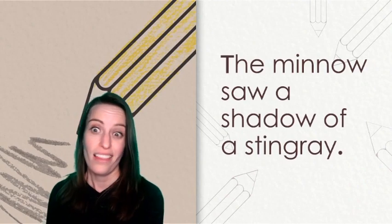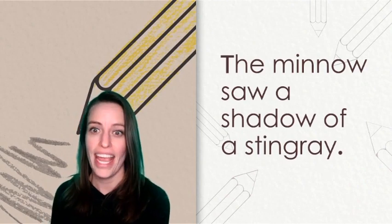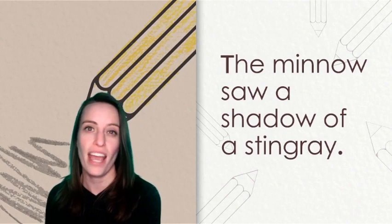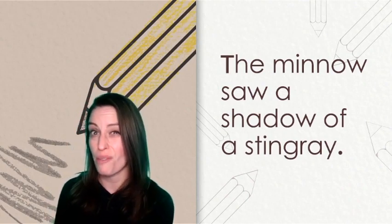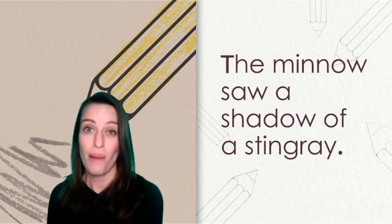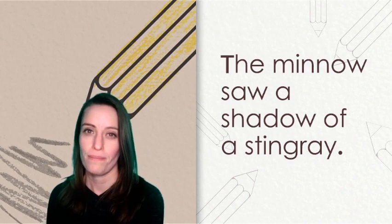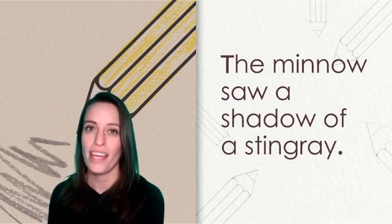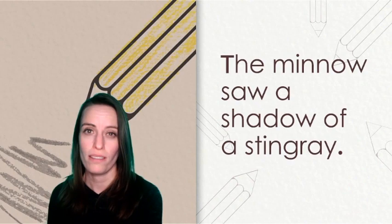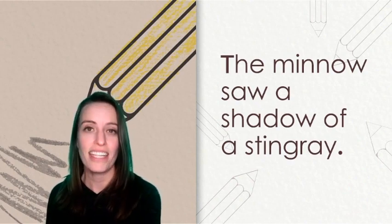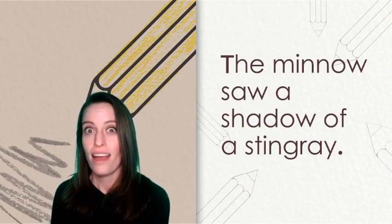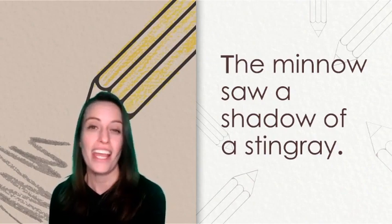Let's check over our sentence together. It's okay if you are still finishing up. The minnow saw a shadow of a stingray. The word minnow has the long vowel O sound at the end of the word. That's why we need the OW vowel team. You'll see that same vowel team at the end of the word shadow. The AY team says A at the end of the word stingray. Stingray is also a compound word.